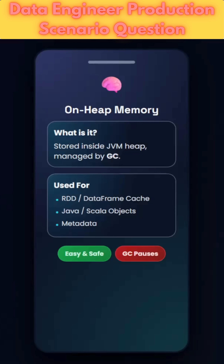To understand that, we need to know the difference between on-heap and off-heap memory. On-heap memory is the execution memory created inside the JVM. It has a garbage collector which can clean unused objects to free up memory for execution and storing intermediary data. It is especially used to store data structures, Java/Scala objects, and some overhead related to metadata.